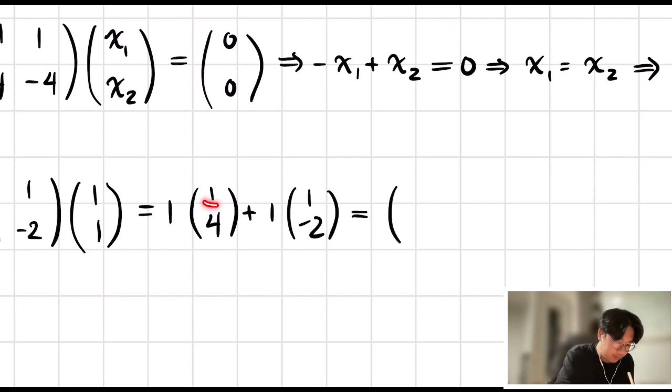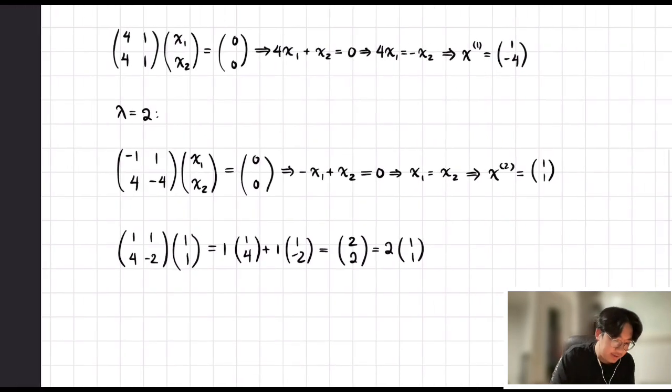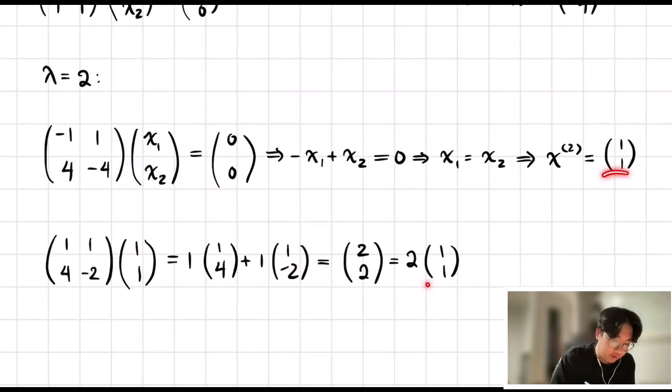We can just do matrix vector multiplication. We multiply 1 and 1 here. You have 1 times 1 plus 1 times 1 minus 2. You simply have 1 plus 1, so 2. And then you have 4 plus negative 2, so just 2. We can factor this out as 2 times 1 and 1. And as you'll notice, we have exactly that. We have our eigenvector back with the corresponding eigenvalue.